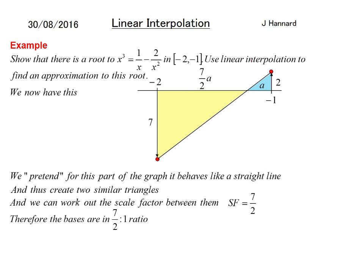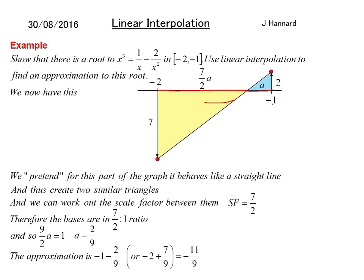Work out the scale factor between them by dividing 7 by 2. The bases are in a 7/2 to 1 ratio. If we call the smaller base a, with scale factor 7/2, the larger base is 7a/2 or 3.5a. The whole red line must equal 9a/2, and that must equal 1 because the distance between -2 and -1 is simply 1. Therefore a = 2/9. You can then do -2 + 7/9, or -1 - 2/9; both equal -11/9, which is the approximate root.